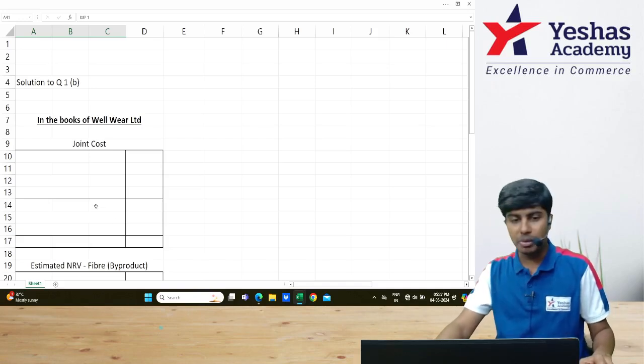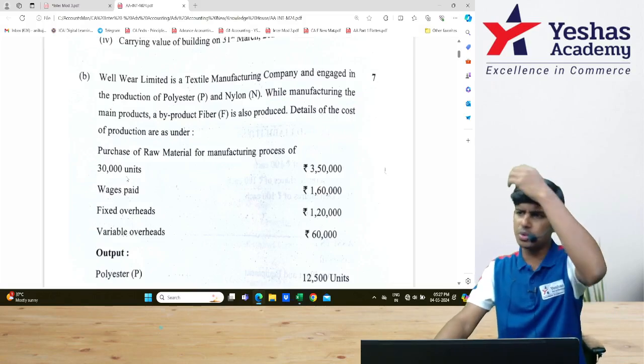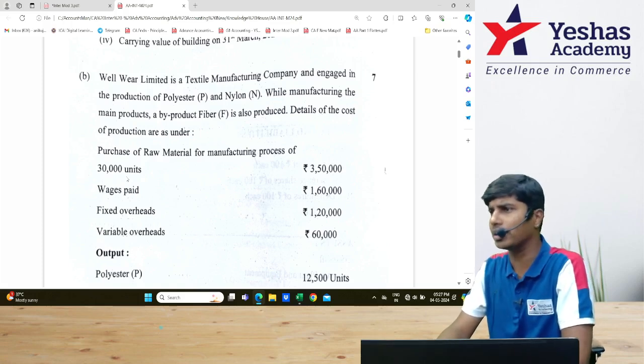We will now solve question number 1B from our examination of May 2024. This is an inventory question involving joint products, byproducts, and scrap. There are two joint products, one byproduct, and one scrap item.